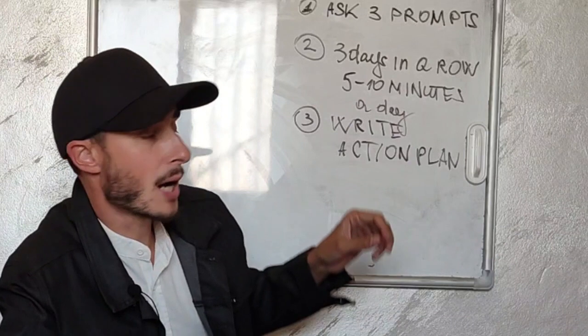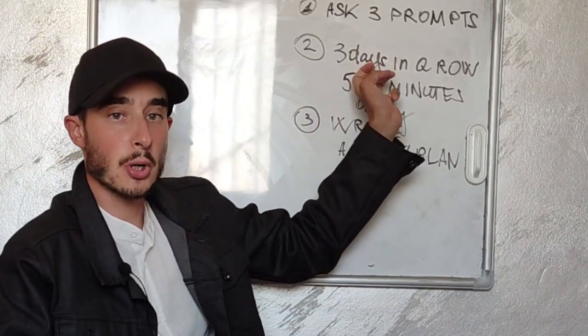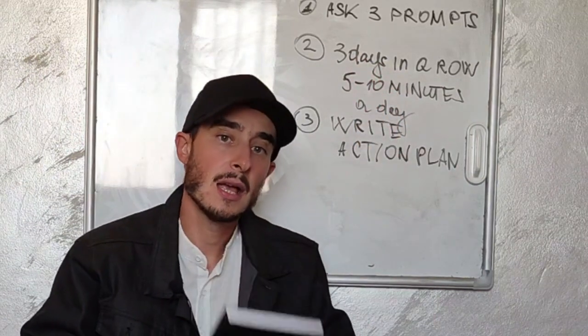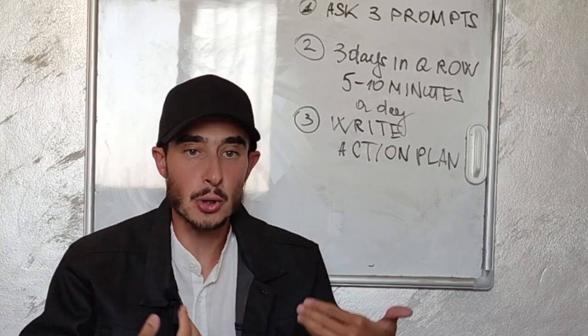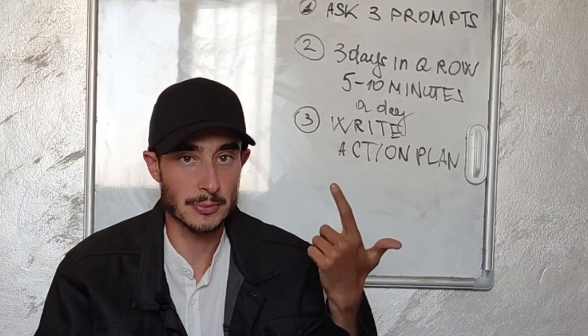So, step number one: ask yourself these journaling prompts and write down your answers in a journal. How do you set boundaries and avoid absorbing someone else's emotions and stress? This is the first prompt.